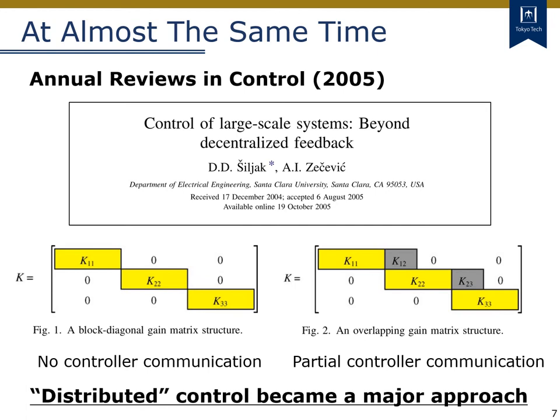At almost the same time, another review article was published in Annual Reviews in Control entitled Control of Large Scale Systems Beyond Decentralized Feedback. The main concern in this paper is about the limitation of classical decentralized control having a block diagonal structure, which corresponds to no communication among controllers. Such a strict control structure may impose a limitation on control performance. This paper proposes a design method of controllers having an overlapping structure, which corresponds to partial communication among controllers. Such controllers are often called distributed controllers, and from this point distributed control became a major approach for large-scale systems control.